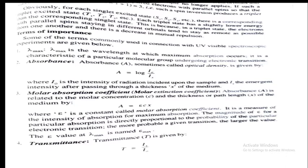Absorbance A is directly proportional to concentration C, and directly proportional to thickness x. The proportionality constant is epsilon, giving A equals epsilon times C times x. This is the Beer-Lambert law. Epsilon is called the molar absorption coefficient — it represents the amount of absorption.